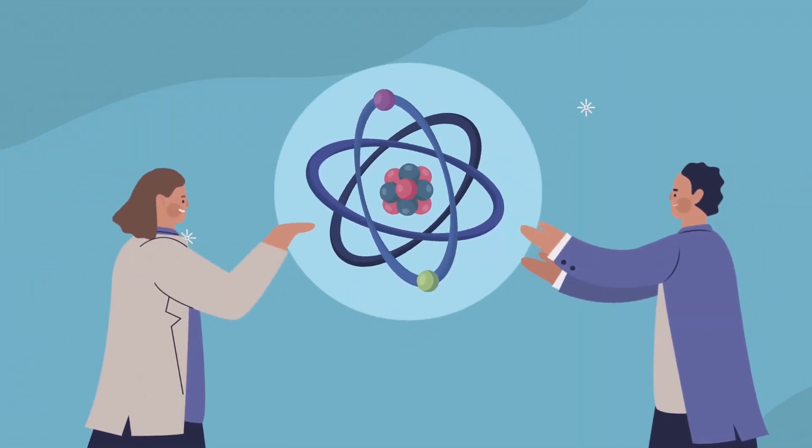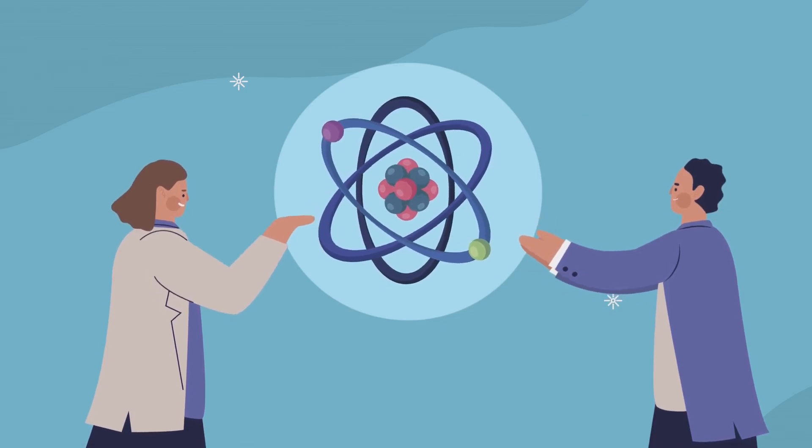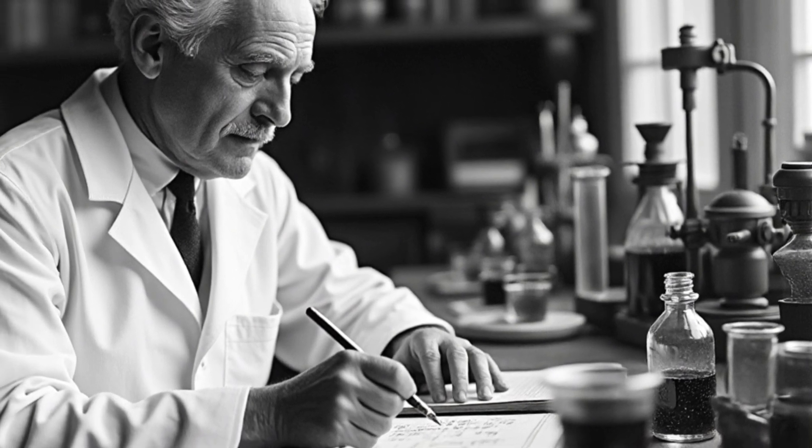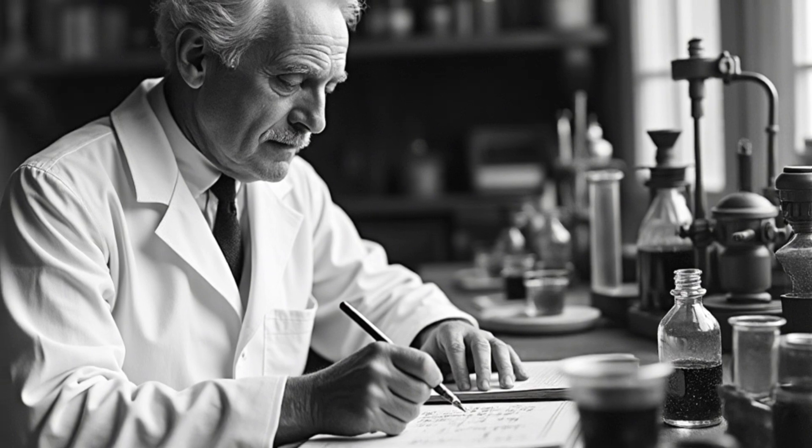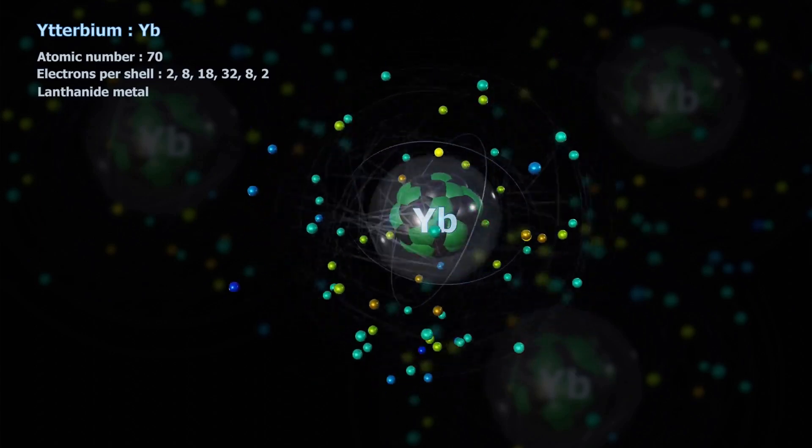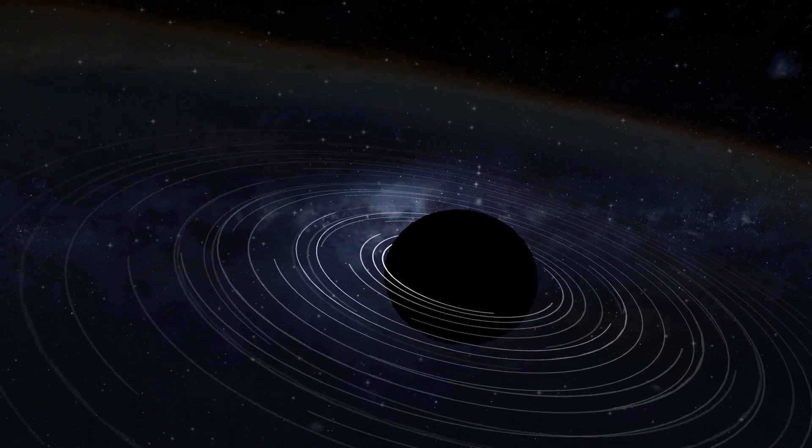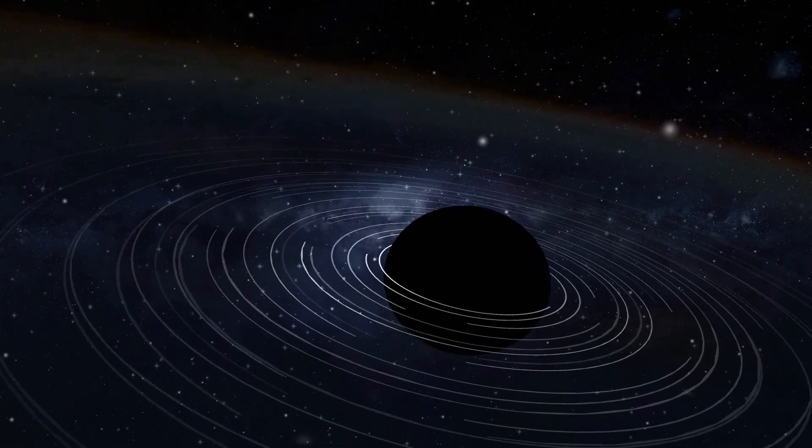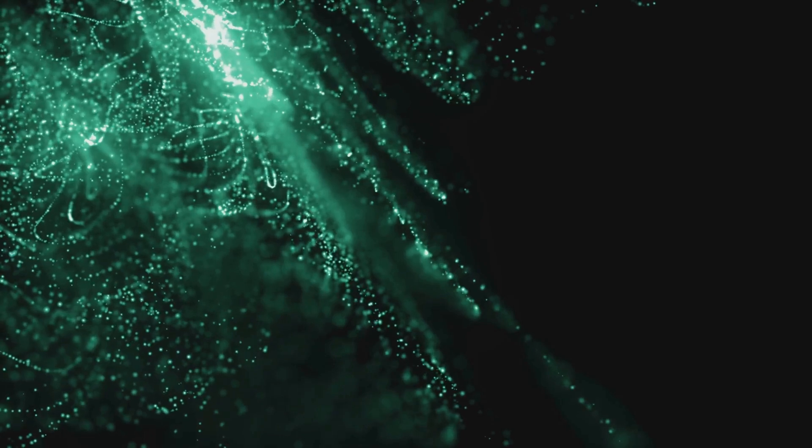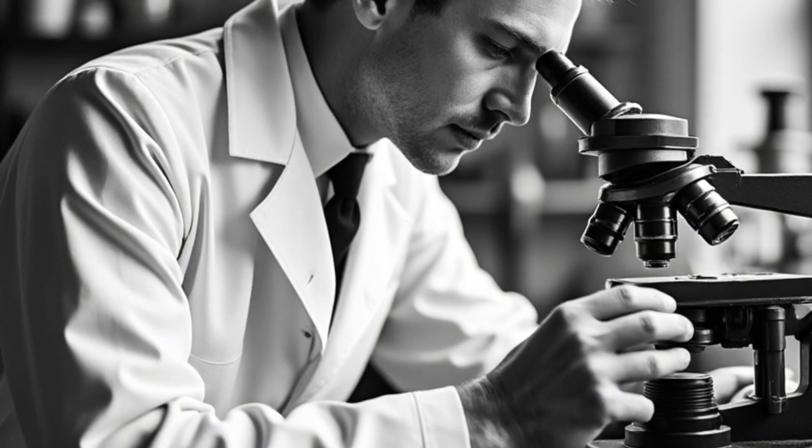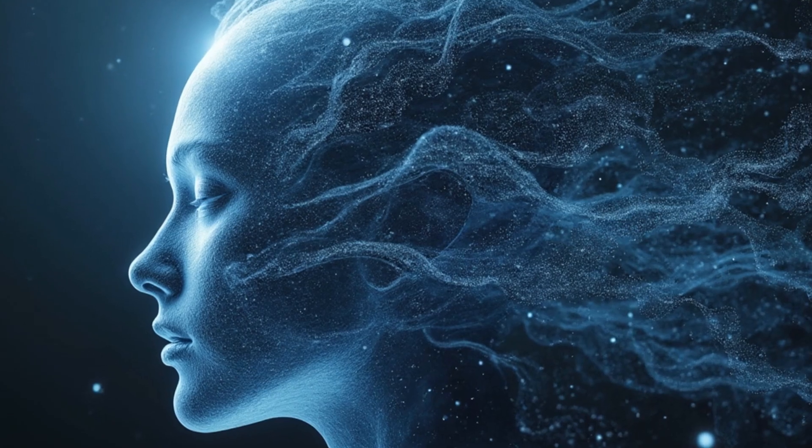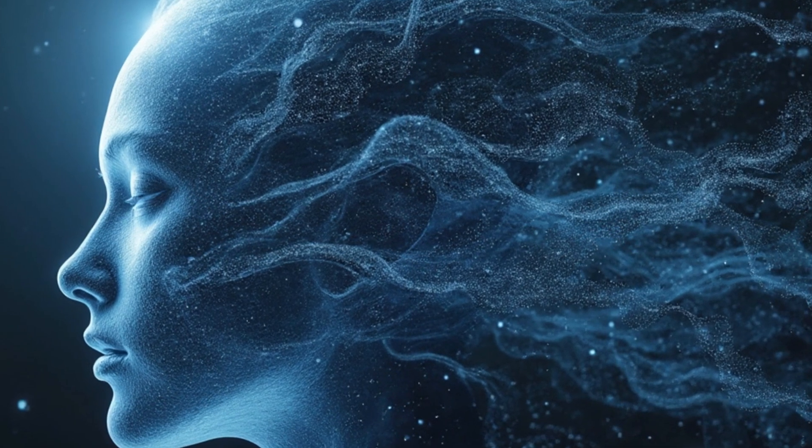The fact that neutrinos can oscillate between flavors suggests that they must have some mass, even though that mass is almost unimaginably tiny. This discovery shook the foundations of particle physics because, for decades, scientists had assumed neutrinos were massless. The fact that neutrinos have mass, however small, raises an even bigger mystery. How do they get that mass? In the standard model of particle physics, the model that describes the building blocks of the universe, particles gain mass through interactions with something called the Higgs field. But neutrinos seem to have such a small mass that they might not get it from the Higgs field at all. This leads scientists to believe there could be an entirely different mechanism at play, one we haven't discovered yet. It's like the universe is hiding a secret recipe for neutrinos, keeping us guessing.